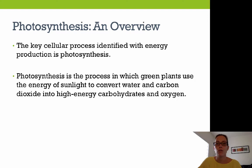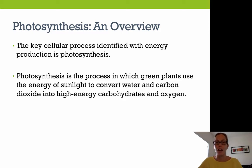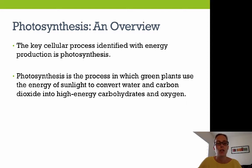Here's an overview of photosynthesis. The key cellular process identified with energy production is photosynthesis. All photosynthetic organisms end up producing food energy for the rest of the organisms on the planet. Photosynthesis is a process in which green plants use energy from sunlight to convert water and carbon dioxide into high-energy carbohydrates — glucose — and oxygen.